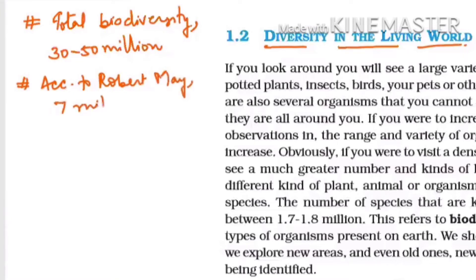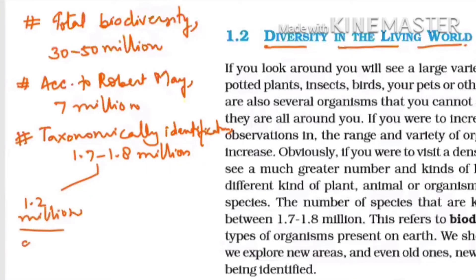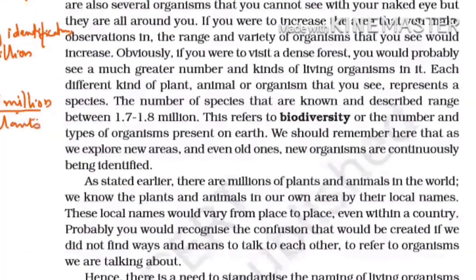According to Robert May, the figure is 7 million. Taxonomically, we have identified only 1.7 to 1.8 million species, out of which 1.2 million are animals and 0.5 million are plants. The number of species that are known and described are nearly only 1.7 to 1.8 million.